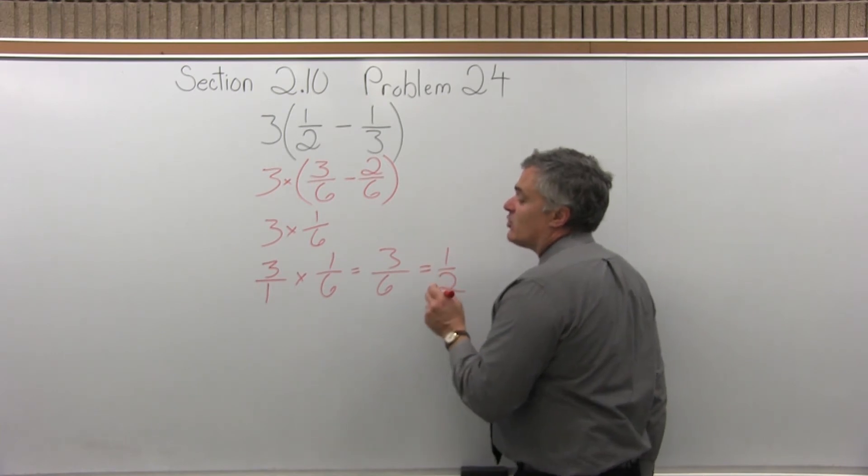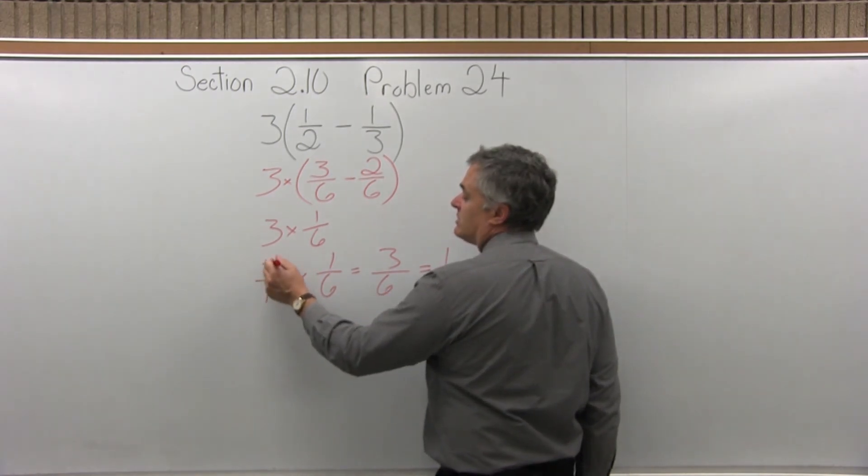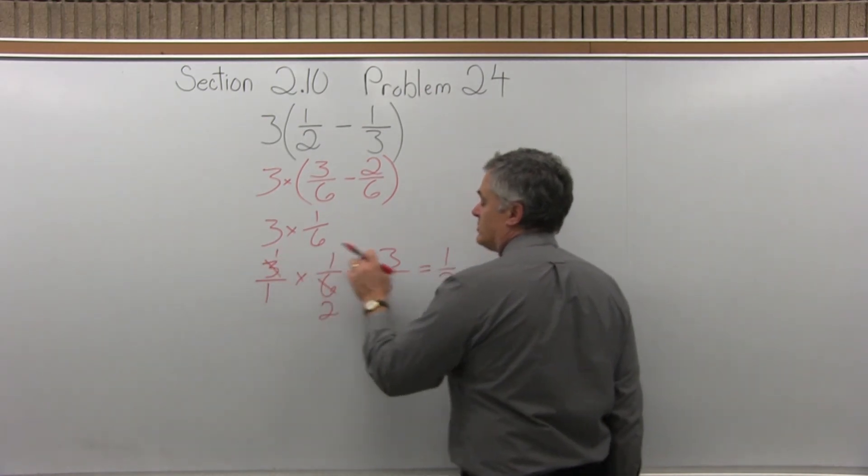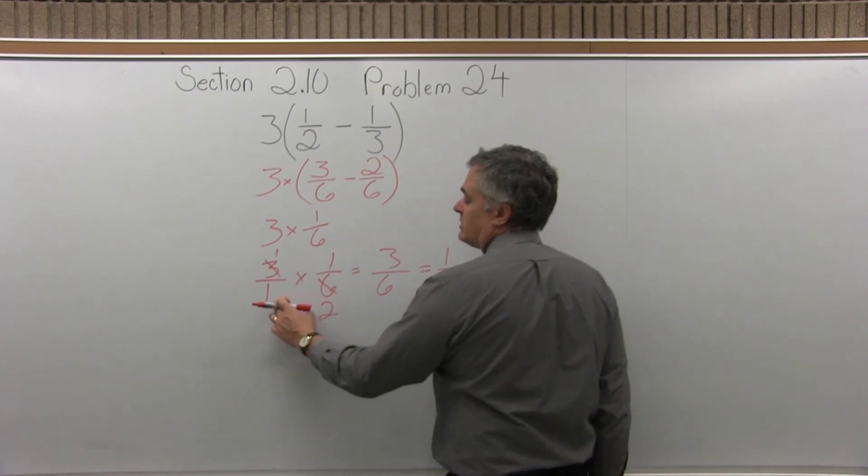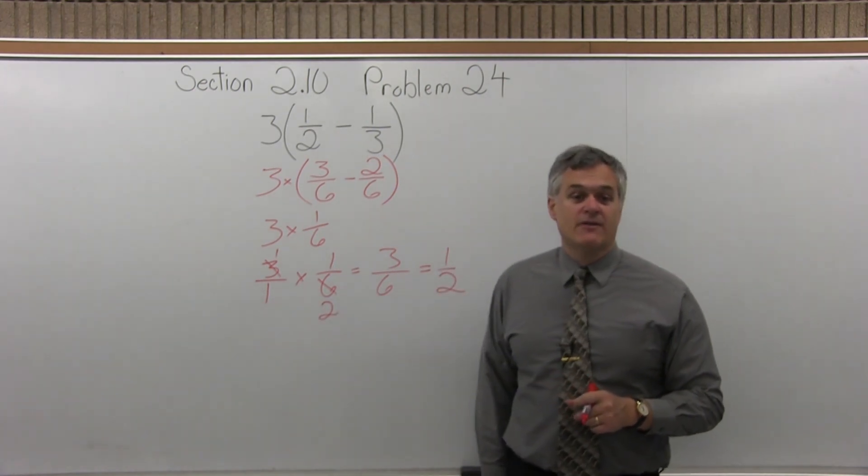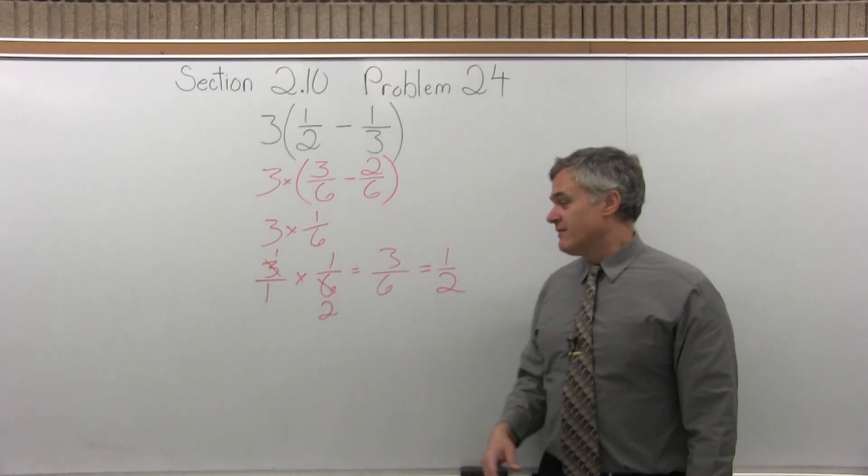And again, notice if I had wanted to, I could have reduced first and multiplied what's left. Three goes into three once. Three goes into six twice. And now on top, one times one is one. And in the denominators, one times two is two. So I still get the same one-half. You can multiply first and reduce what you get or reduce first and multiply what's left.